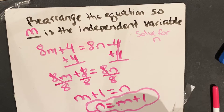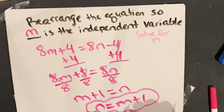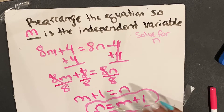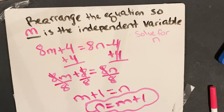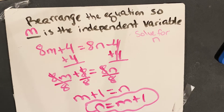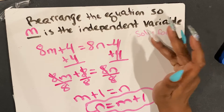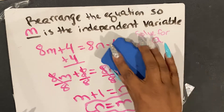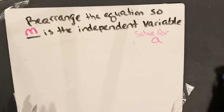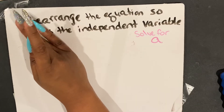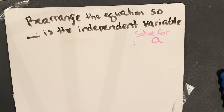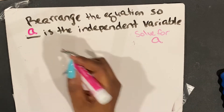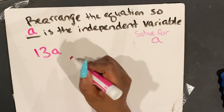So the first thing I'm going to do is I'm going to show you an equation. We want m to be our independent variable. So I have 8m plus 4 equals 8n minus 4. Now, you do not have the same variable. We are not looking at combining our variables and then combining our constants. That's not what this is.